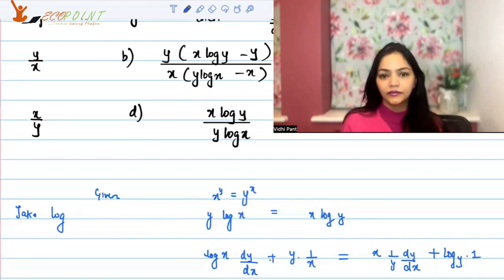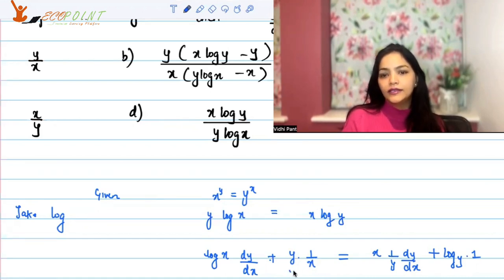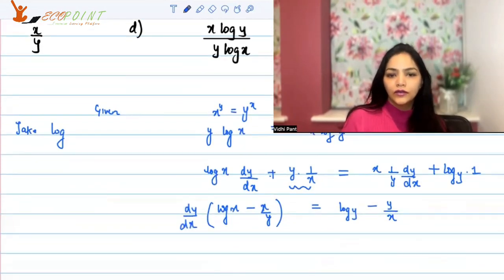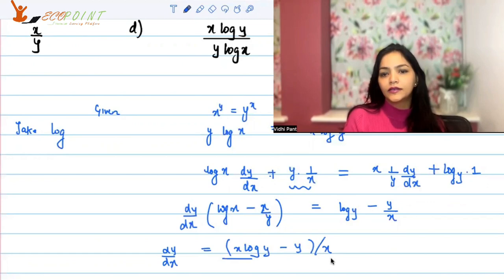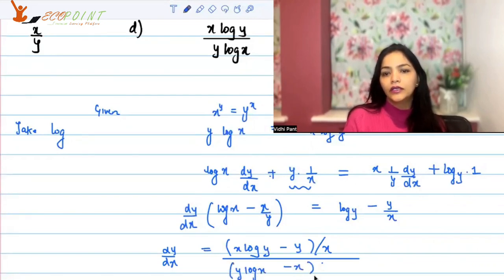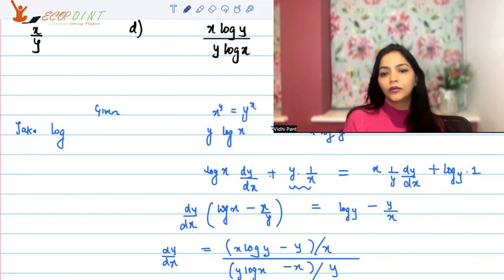Now collect the terms with dy by dx. So dy by dx times (log x minus x upon y) equals log y minus y by x. Taking LCM: dy by dx times (y log x minus x) upon y equals (x log y minus y) upon x. Therefore dy by dx equals y times (x log y minus y) upon x times (y log x minus x), which should be the correct answer.